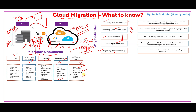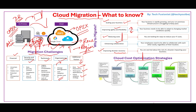Now, beyond the reasons and challenges, let's talk about strategies to save cost during migration. Whether you're migrating to save cost, improve performance, or scale your business, the first strategy is right sizing — you don't need to go with a higher size in advance because you have the flexibility to increase or decrease resources as needed in just a few minutes.